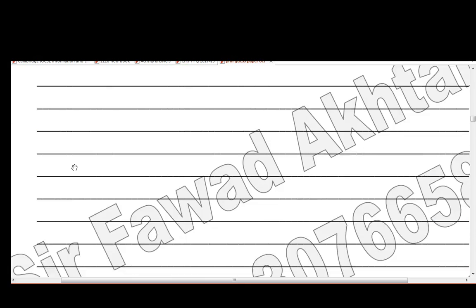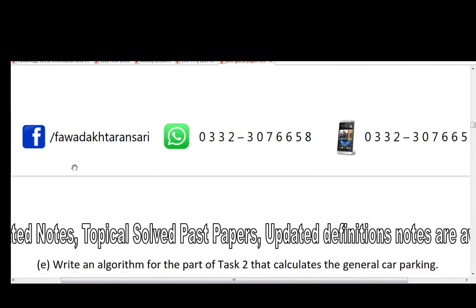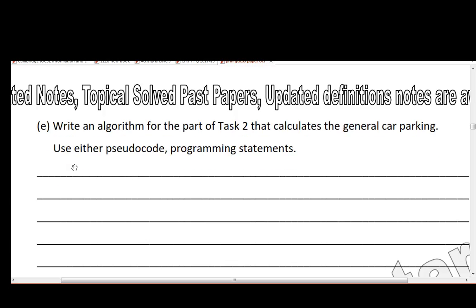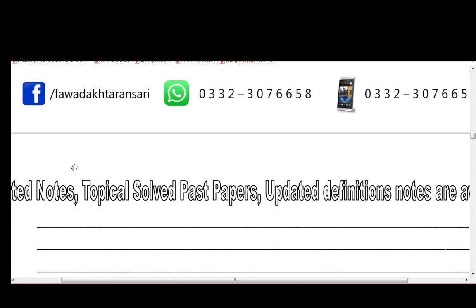Next, write an algorithm for the part of task 2 that calculates general car parking. Same procedure — you may use your pseudo code or programming statements to write the algorithm.